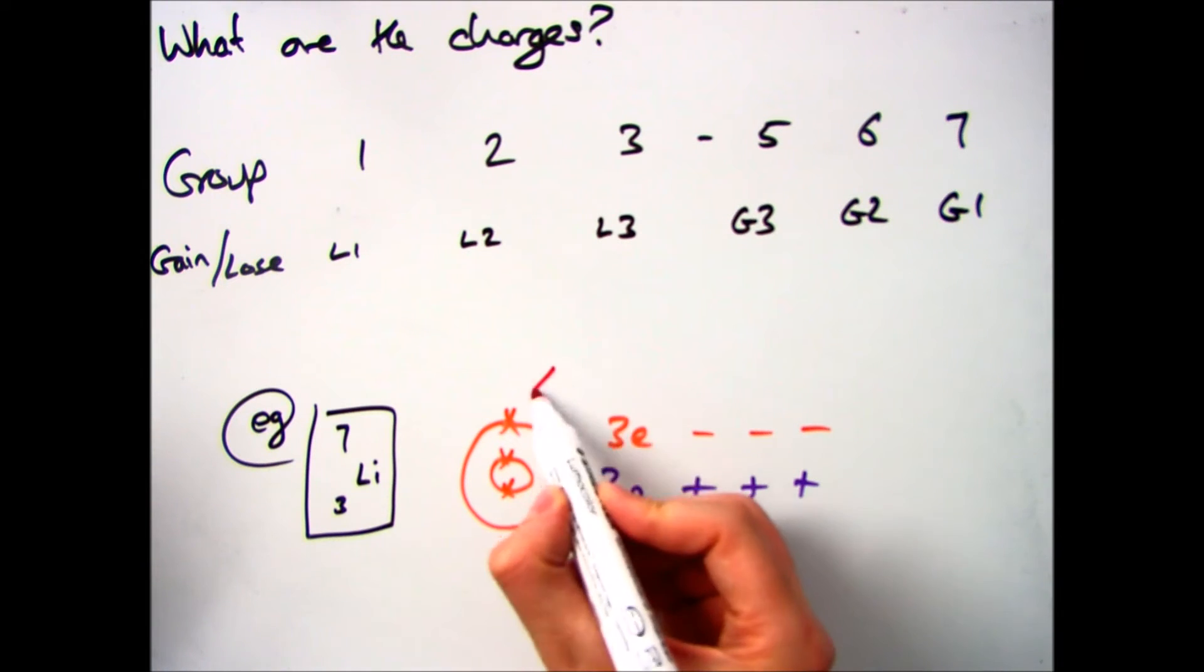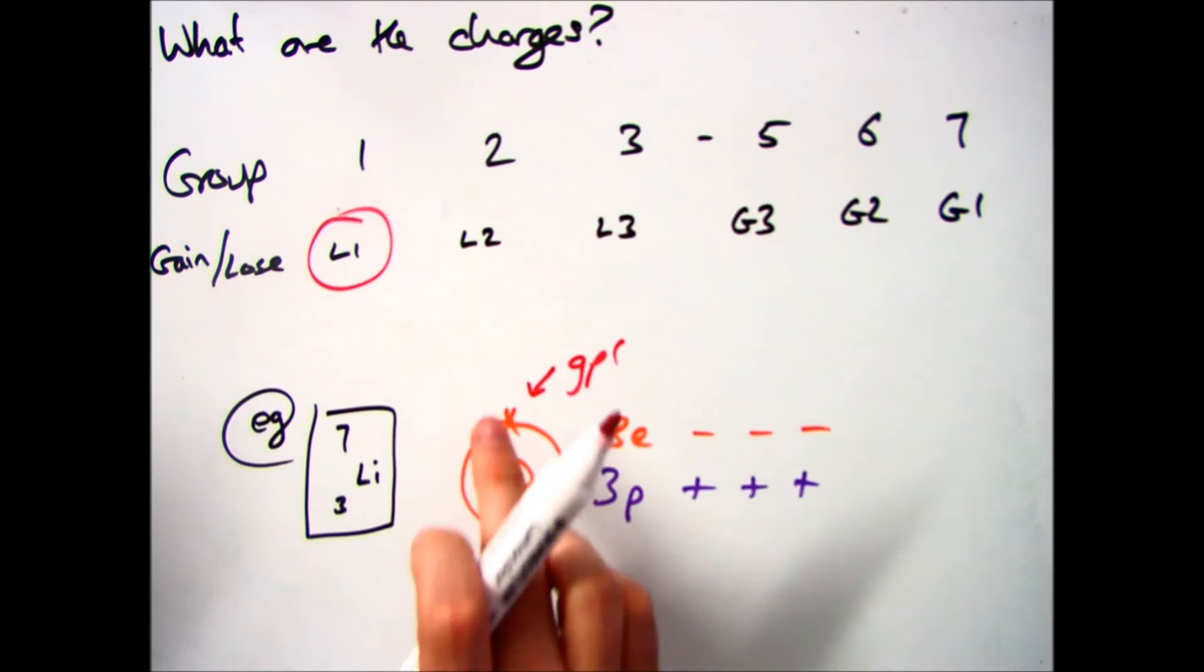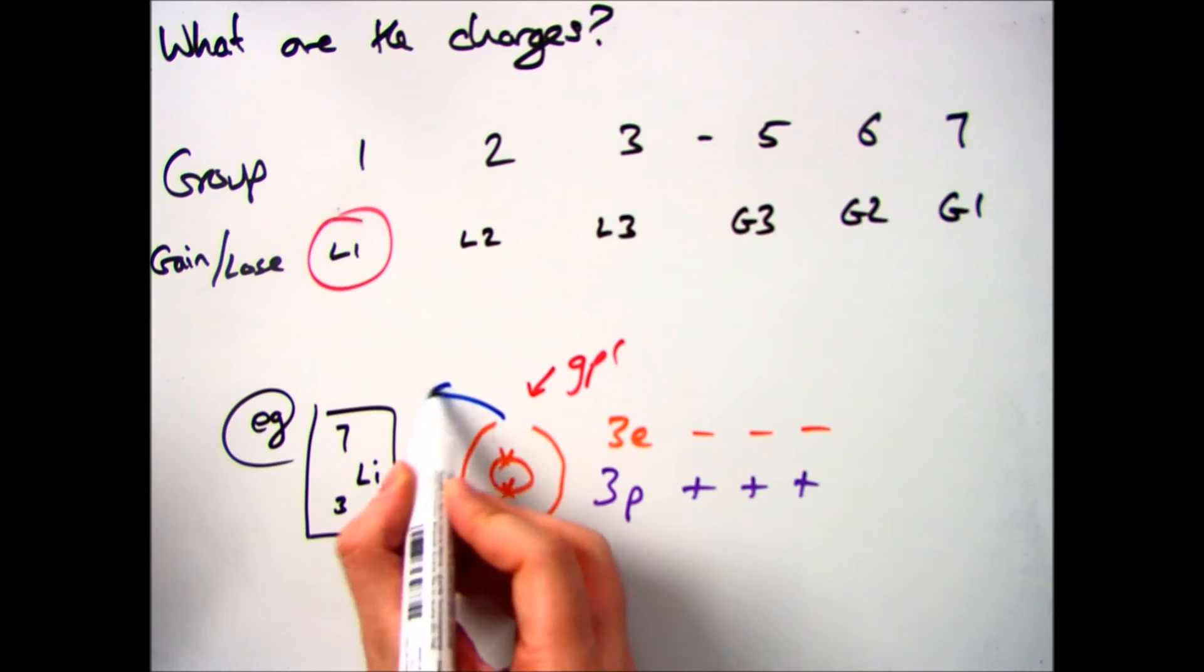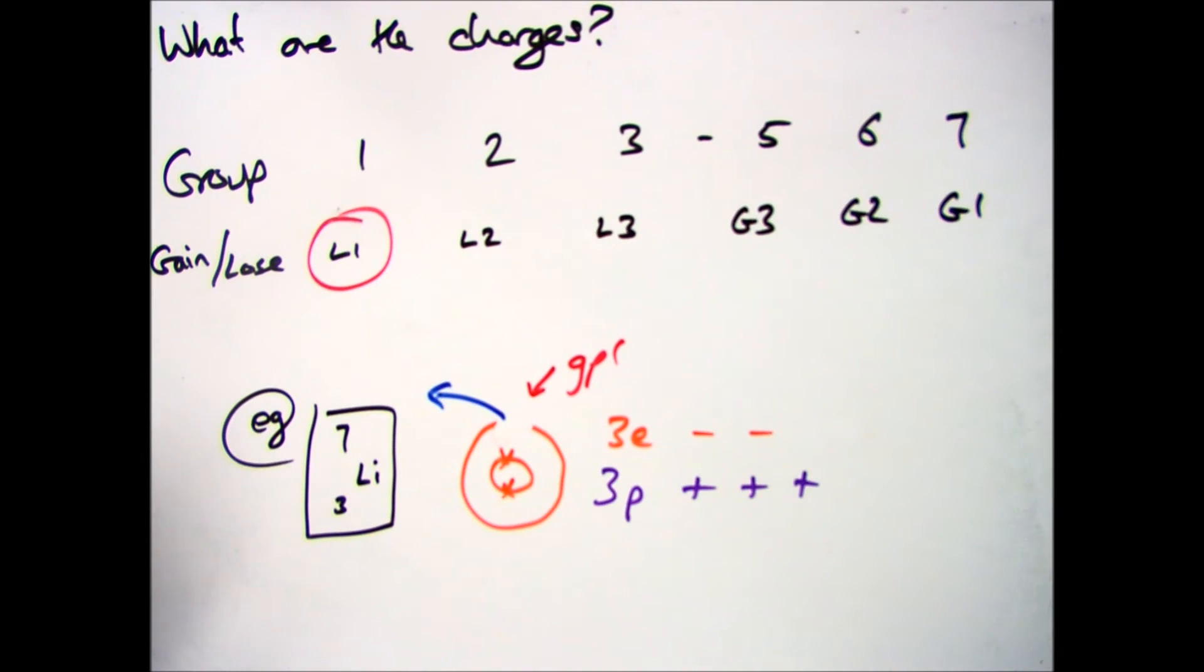Now because it's in group 1 and loses 1 electron, we also lose 1 negative charge. So the other charges will cancel each other out, which leaves us with 1 positive charge. So my formula is Li+ for my lithium ion.